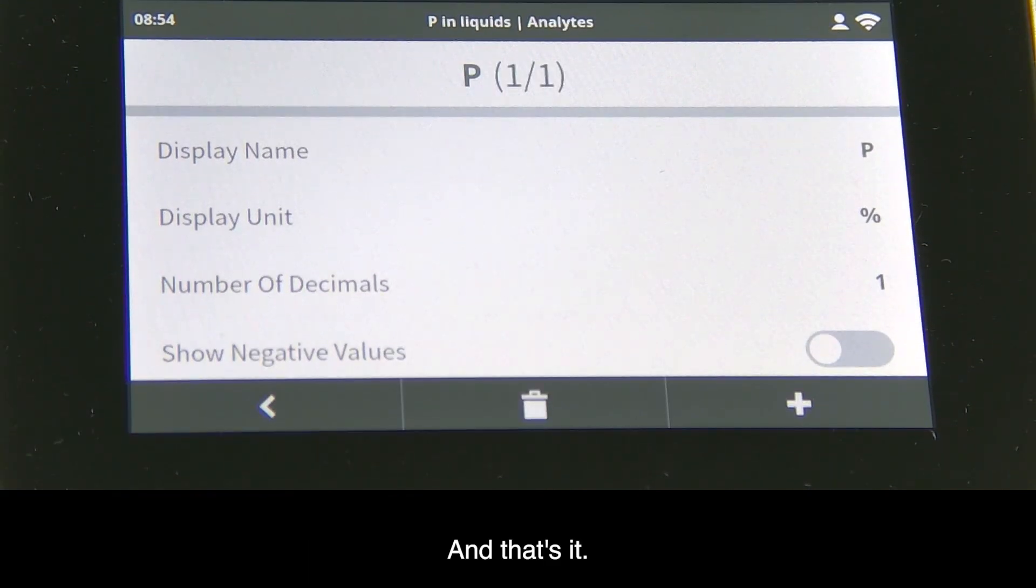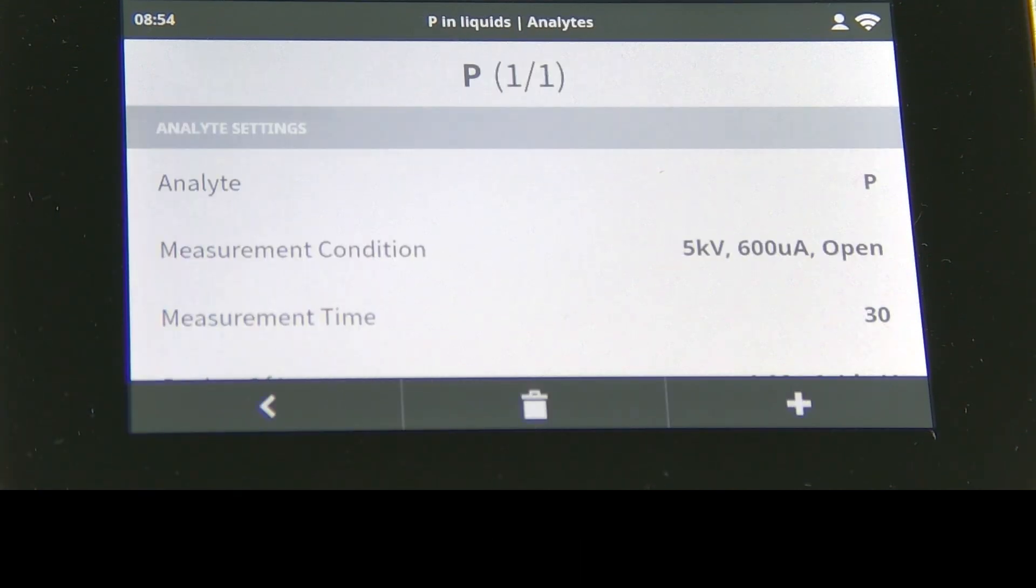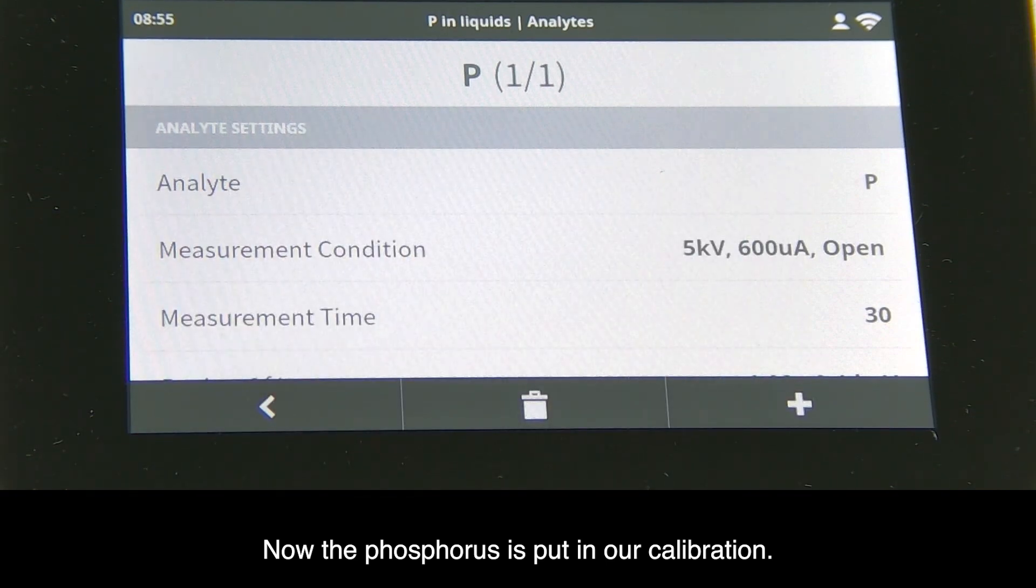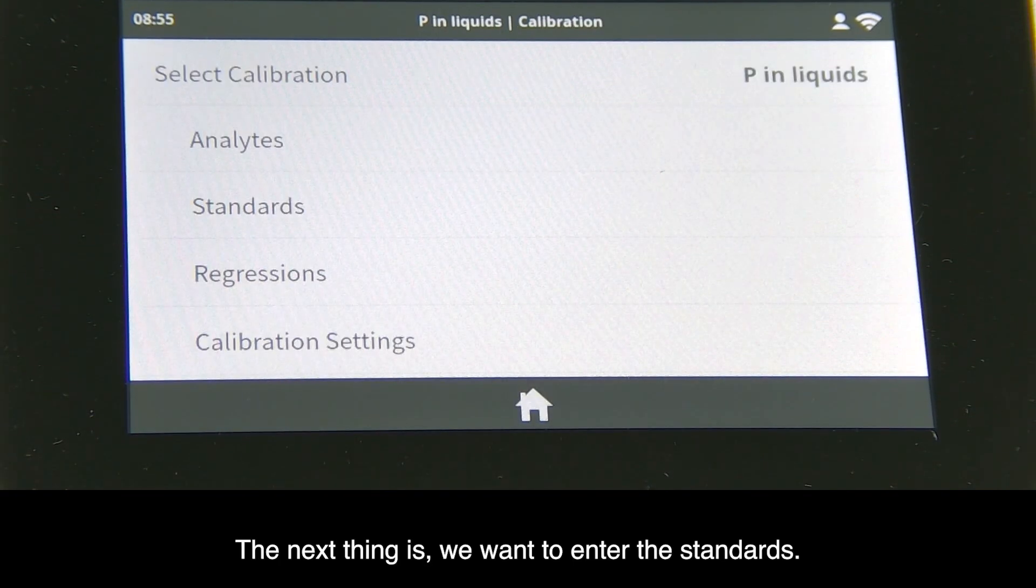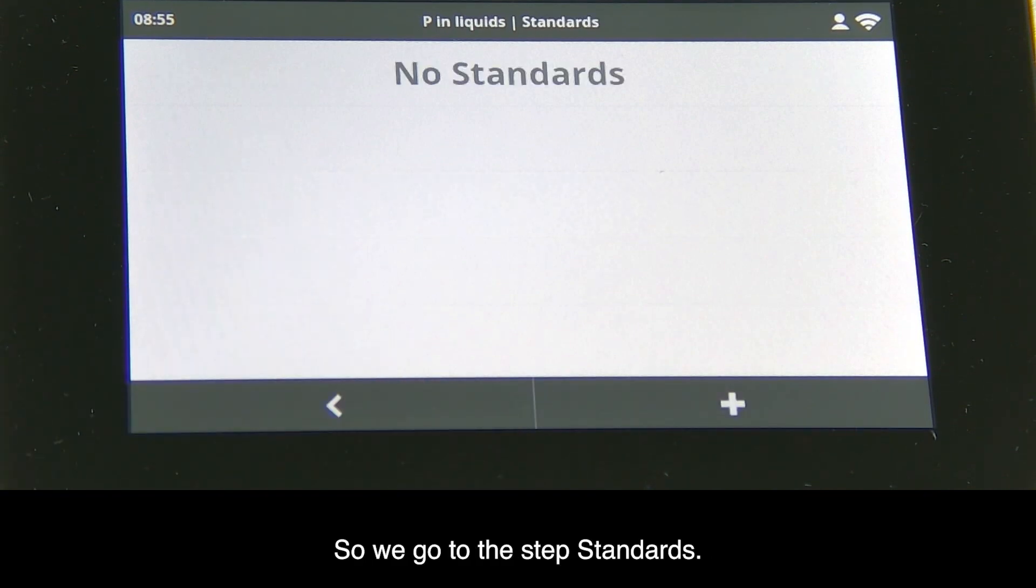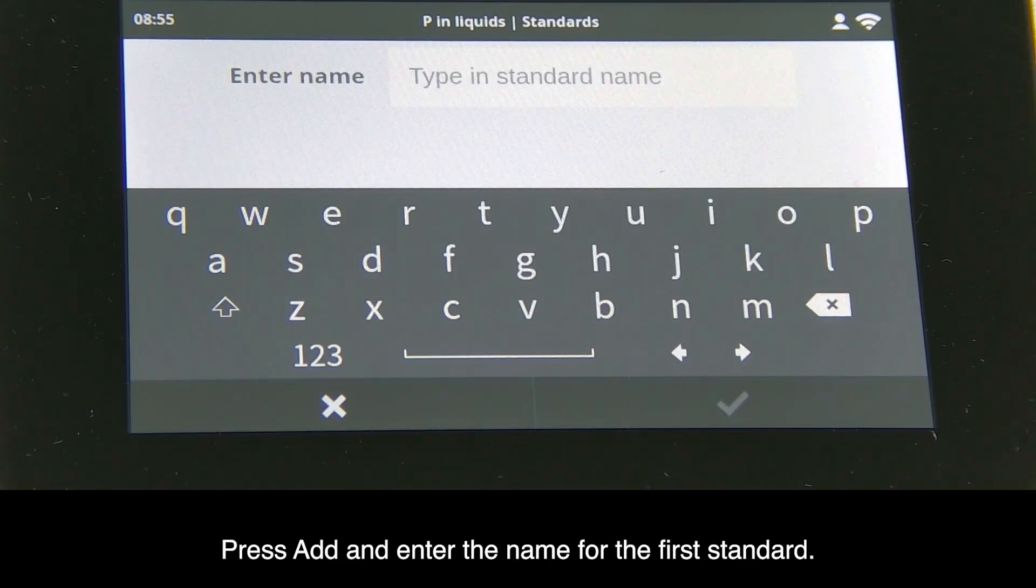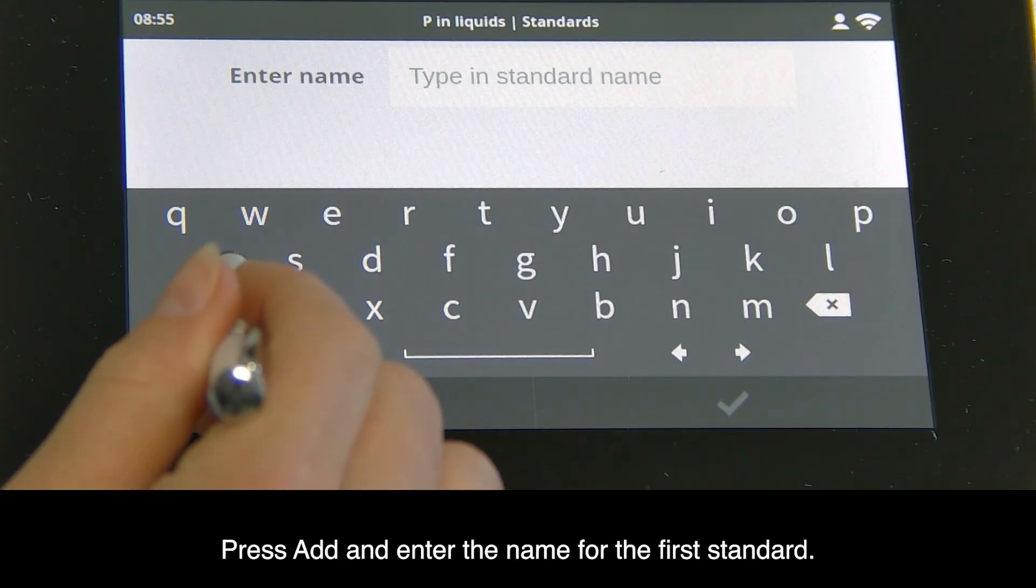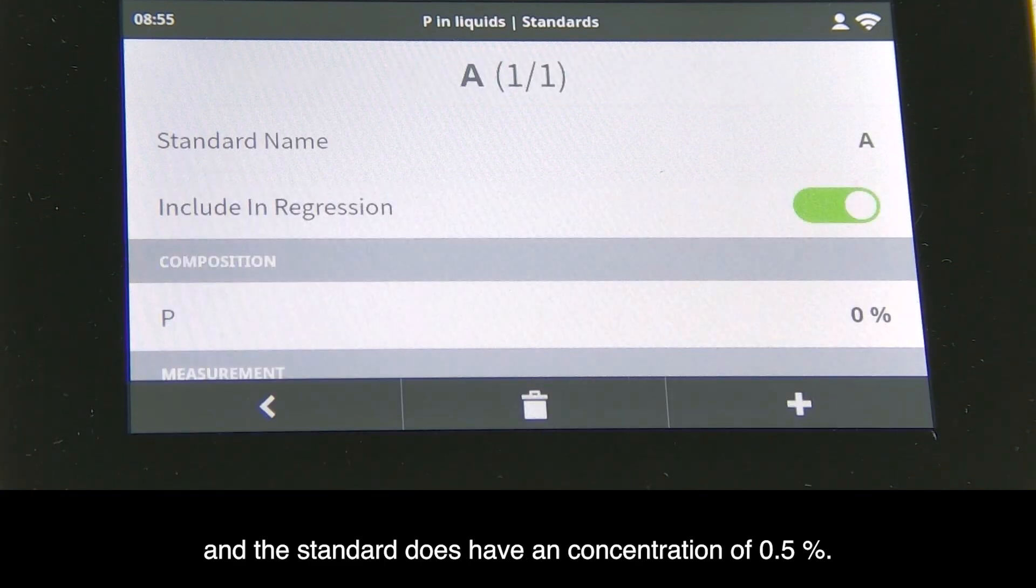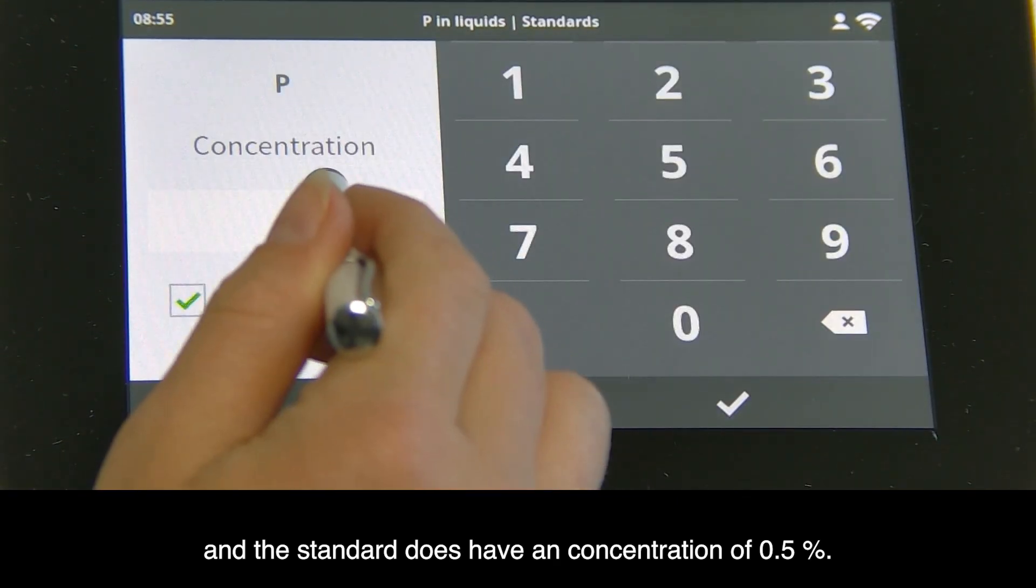Go back and check - now phosphorus is in our calibration. Next we enter the standards. Go to standards, press add, and enter the name. Our standard is A with a concentration of 0.5 percentage.